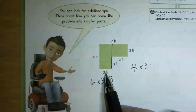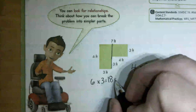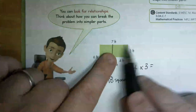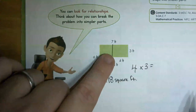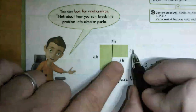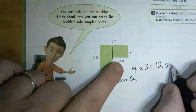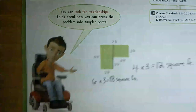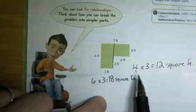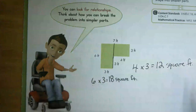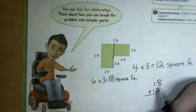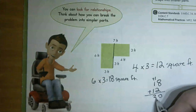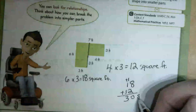I'm not going to worry about the seven feet or three feet for now. I'll just use base and height. Here I've got three times six for the first rectangle: six feet times three feet. Over here my base is four feet times the height of three feet, so four times three. Six times three is eighteen square feet. Four times three is twelve square feet.